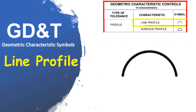Line profile is a two-dimensional tolerance that limits the amount of error for line elements relative to their true profile. The tolerance zone surrounds any line, usually a curved shape. Profile of a line is a two-dimensional tolerance range that can be applied to any linear tolerance, and is measured using a gauge referenced to the true profile at a given specific cross section.